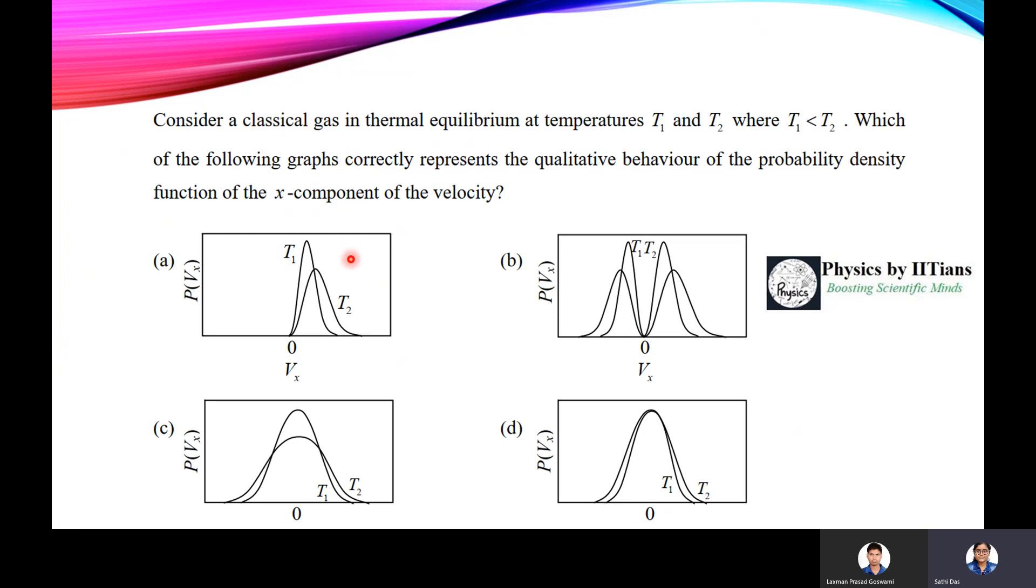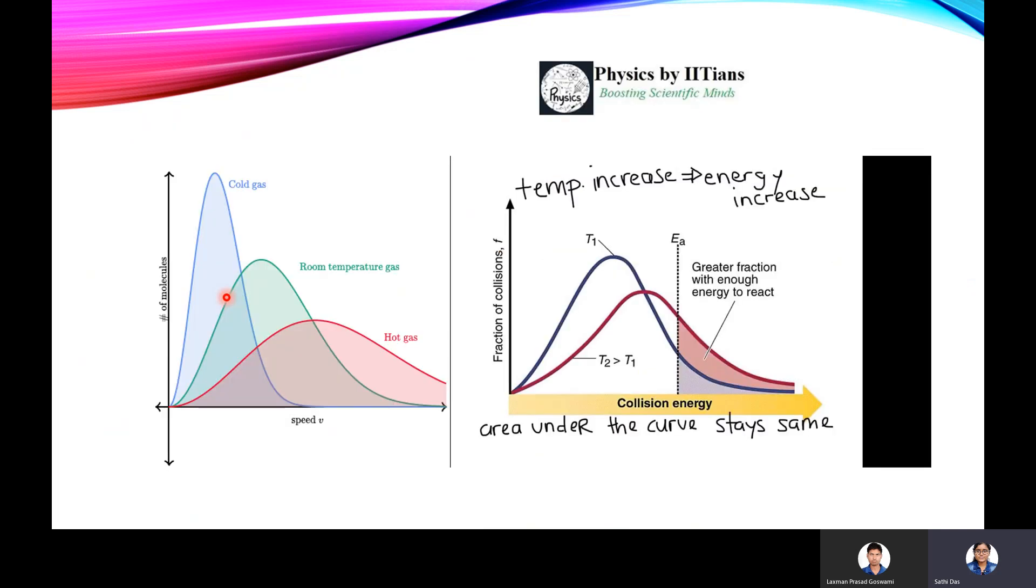The next question is a very easy question and this is a very important concept. Consider a classical gas in thermal equilibrium at temperature T1 and T2 where T1 is less than T2. Which of the following graphs correctly represent the qualitative behavior of the probability density function of the x component of velocity? This is the Maxwell velocity distribution, Maxwell-Boltzmann velocity distribution curve.